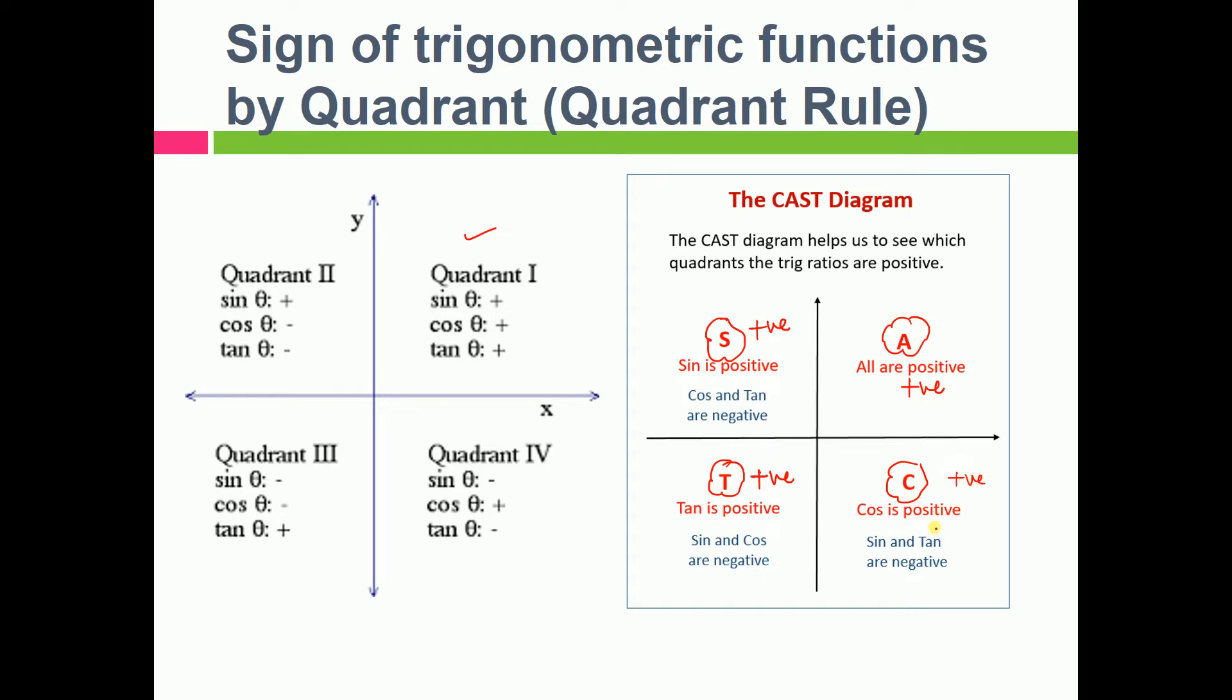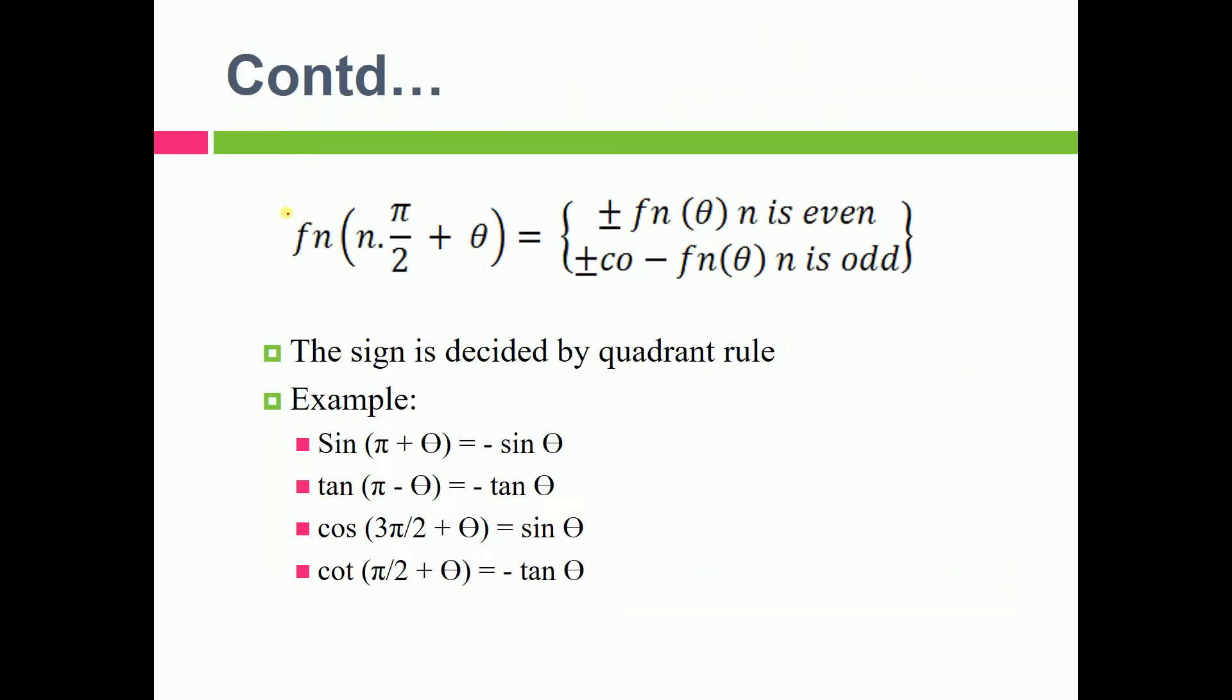And in the last one we have cos as positive and the rest others are negative. So many people learn in a different manner. Different ways are there to remember. Some remember it with the help of cast diagram, C-A-S-T. Some remember all sine tan cos. This general function, if you can remember this that's fine, otherwise you can make these four quadrants and you can just analyze in which quadrant which one is positive.